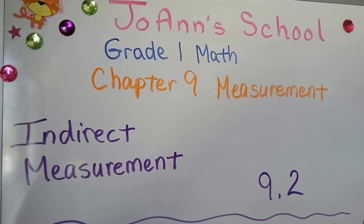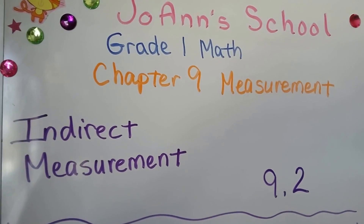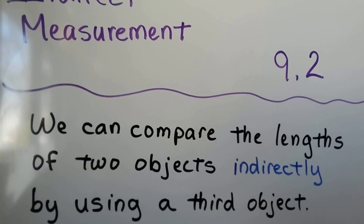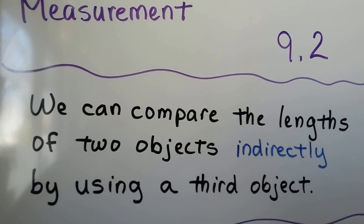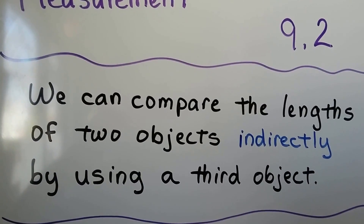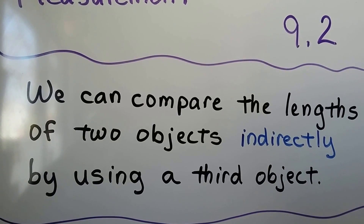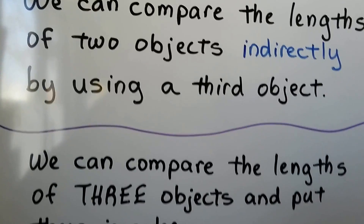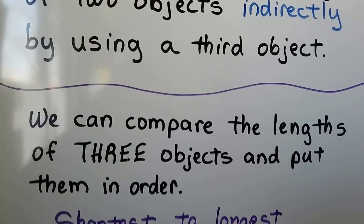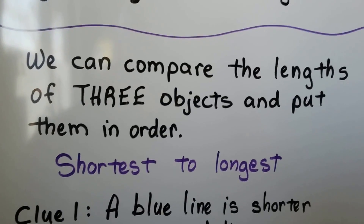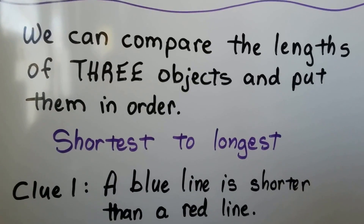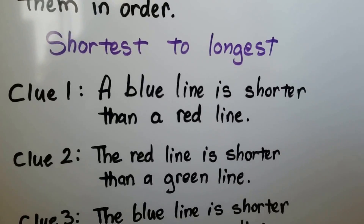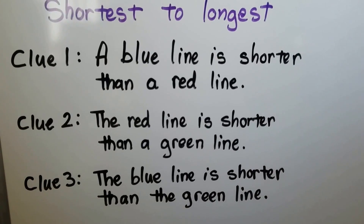Indirect Measurement, Lesson 9.2. We can compare the lengths of two objects indirectly by using a third object. We can compare the lengths of three objects and put them in order from shortest to longest. We have some clues to help us.